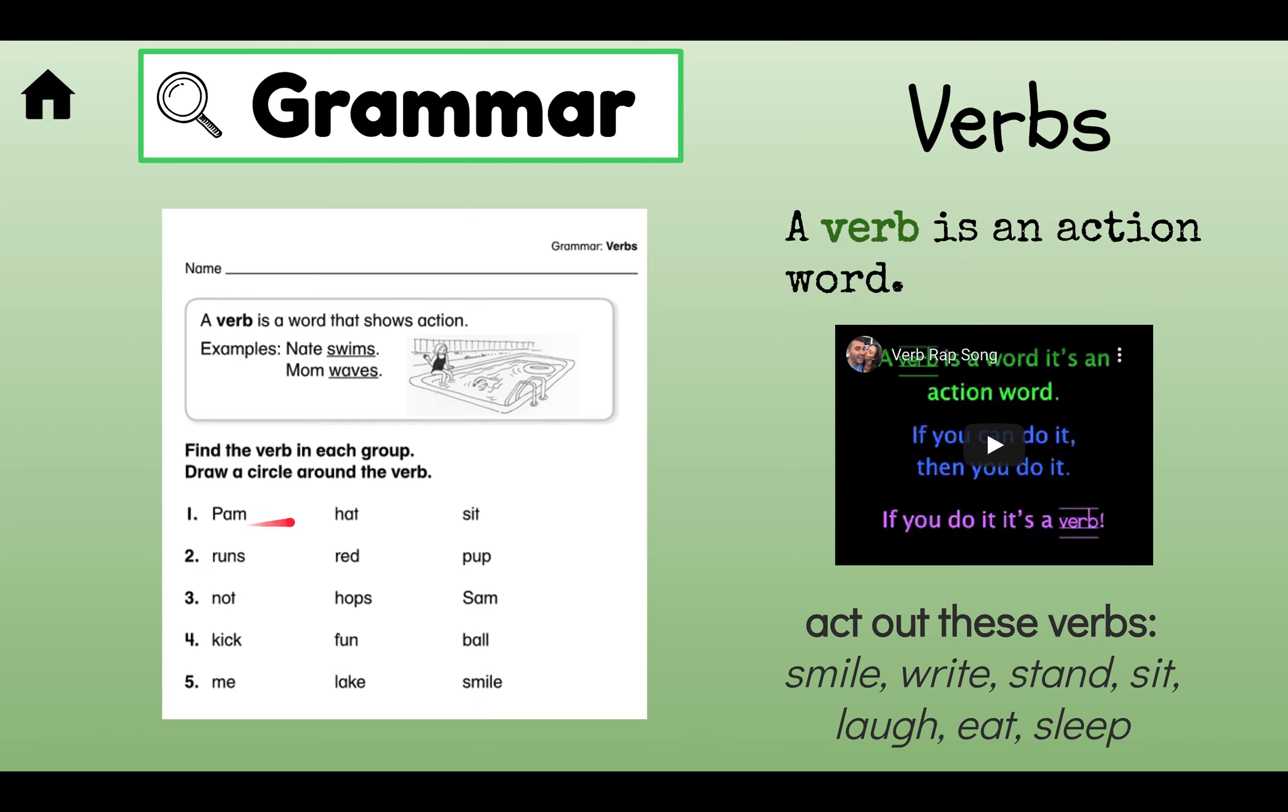Pause the video here. Which word is the verb for number one? Pam, hat, or sit? You're right. It's sit. What about number two? Runs, red, or pup? Which is my action word, my verb? Runs. Number three. Not, hops, Sam. Hops. Number four. Kick, fun, ball. Kick. That is the action. Number five. Me, Blake, smile. Which word is a verb? Smile. It's something you do. A verb is an action word. It's something that you do.